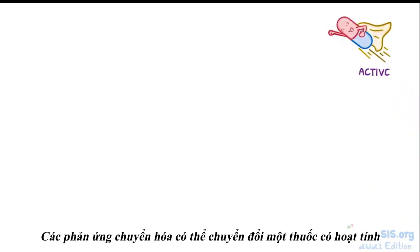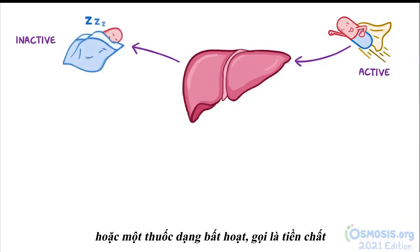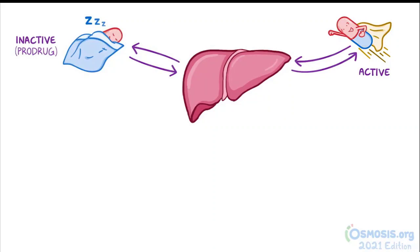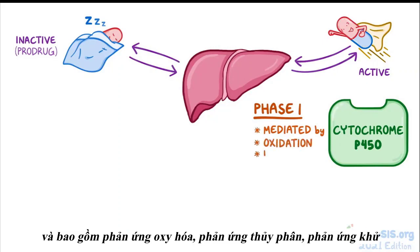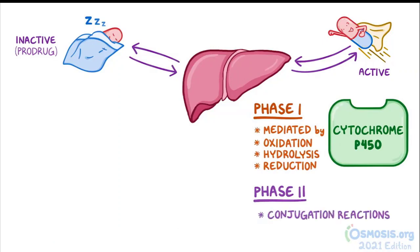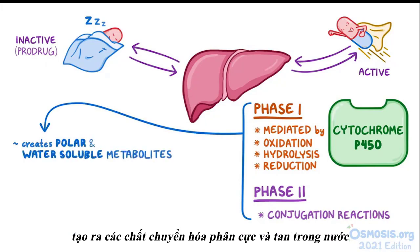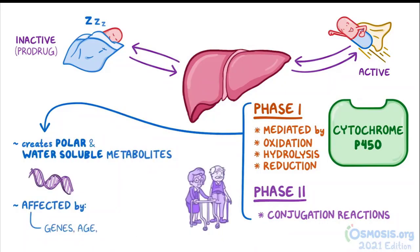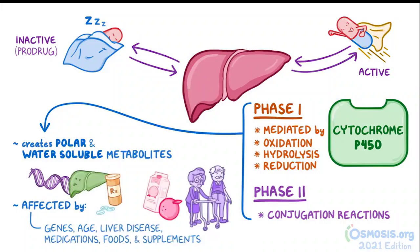As a quick recap: metabolic reactions can transform either an active medication into an inactive metabolite, or an inactive medication called a prodrug into an active metabolite. There are two phases. Phase 1 is mediated by cytochrome P450 and involves oxidation, hydrolysis, or reduction, and phase 2 involves conjugation reactions. Both take place in the liver, creating polar and water-soluble metabolites, and are affected by genes, age, liver disease, and interactions with medications, foods, and supplements.